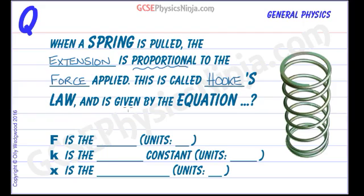So this is called Hooke's Law. It's given by the equation F equals K multiplied by X, F equals KX. So let's see what this actually means in practice.